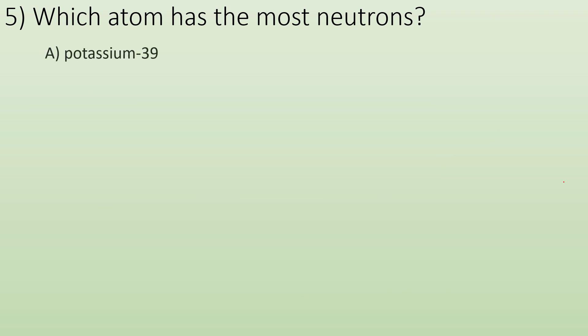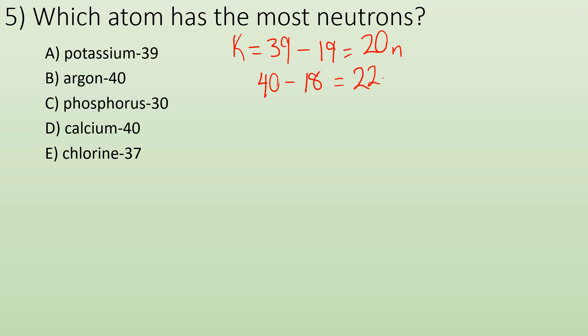Problem five. Which atom has the most neutrons? You've got to do a bunch of math. You've got to look up the atomic numbers for all of these elements. Potassium, its mass is 39 minus its atomic number, and I get 20 neutrons. Argon, do the same thing. Its mass is 40 minus its atomic number of 18, which tells me there's 22 neutrons in argon 40. Phosphorus 30 tells me I have a mass of 30 minus the atomic number of 15, and that tells me I got 15 neutrons. Calcium has a mass of 40 minus its atomic number of 20, which tells me that one has 20 neutrons. Chlorine 37 has a mass of 37 minus 17 as its atomic number, and you end up with 20. So which one has the most? Choice B.